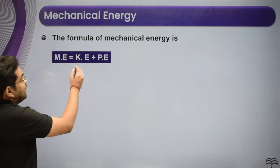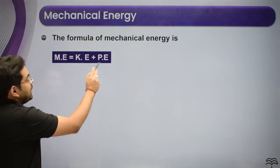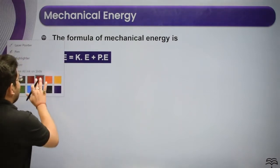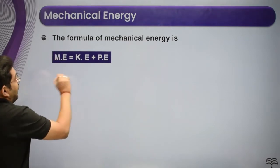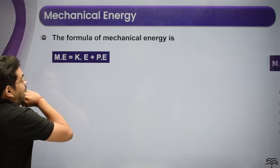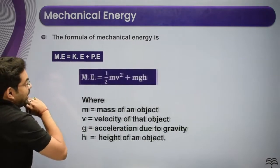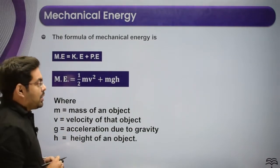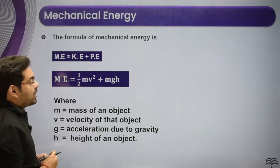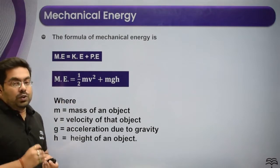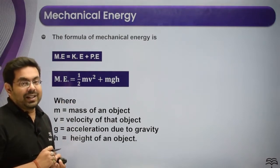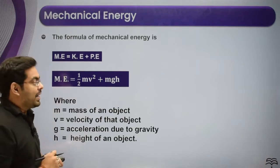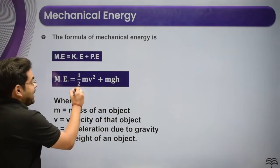Mechanical energy is equal to kinetic energy plus potential energy. If the body is running, then it will have some velocity. Suppose it will be at a position which is ground level or reference level.